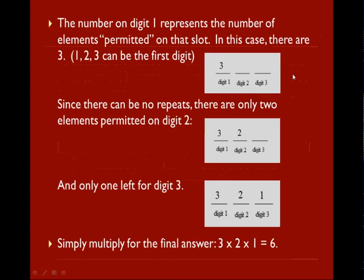So now we're going to fill out the slots. The number on digit 1, this 3 here, represents the number of elements that's permitted on this slot. So in this case, we have 3 because either 1, 2, or 3 can qualify for the first digit. So since this is a permutation, there can't be no repeats. So there are only two elements permitted on digit 2, because whatever we used on the first digit, we can't use again. And by the same logic, only one digit left for digit 3. And now you just multiply across to get your final answer, which is the same thing as what we got from the formula: 6.